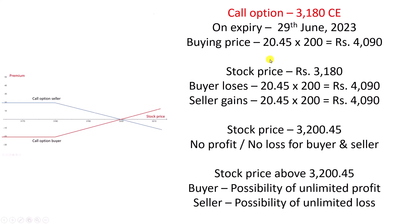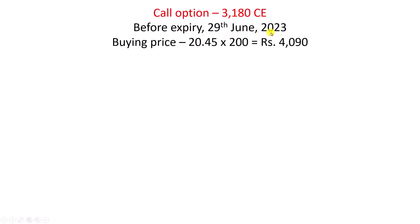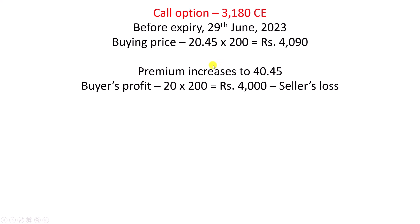The second condition is you sell it before expiry — before 29th June 2023. You sell the options or you buy back the options if you are a seller. You had bought on 16th June 2023. Now, the next day, let us say that the premium increases to 40.45. We are not concerned about the stock price — we are worried about only the premium. Let us say that today you had bought the option by paying 20.45, and tomorrow the premium has increased to 40.45. You can sell the option and make a profit.